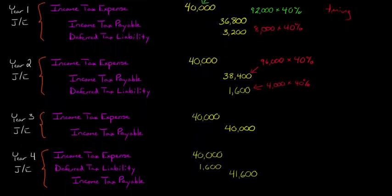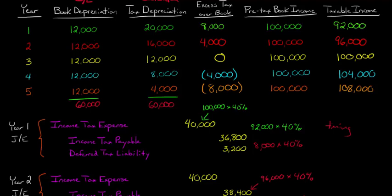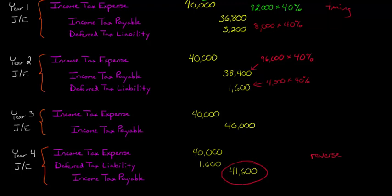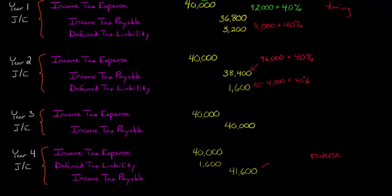In year four, the deferred tax liability starts to reverse. We now have less tax depreciation relative to book depreciation, so we begin undoing the liability by debiting it. Income tax expense is $40,000. Income tax payable is $104,000 times 40% = $41,600. The deferred tax liability is debited for $1,600, decreasing the liability.